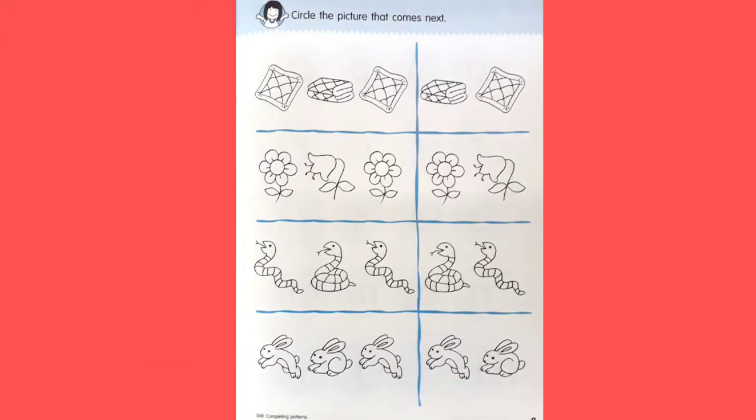Okay, open Twinkle ABC Book page 9. Circle the pictures that come next.